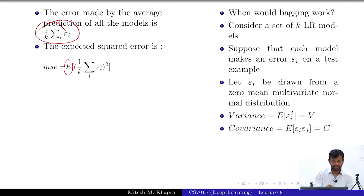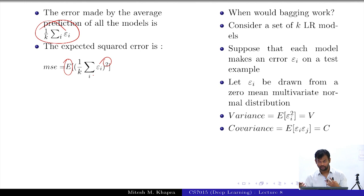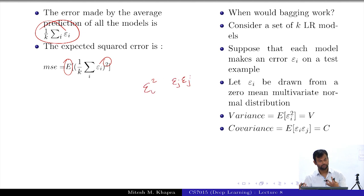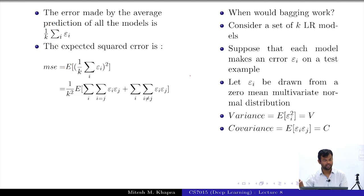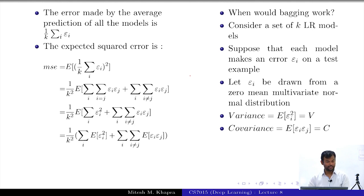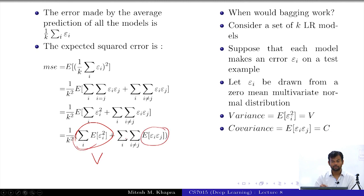The expected squared error is the expectation of the square of this average. This is a square of a sum, so it leads to terms of the form epsilon_i squared and cross terms epsilon_i times epsilon_j. We had not assumed the covariance was zero — there is some covariance C. We would want the errors to be independent, but in the general case we assume some covariance. So this is what the expression looks like after expanding.